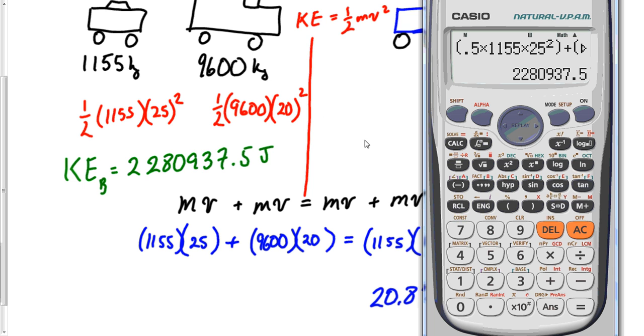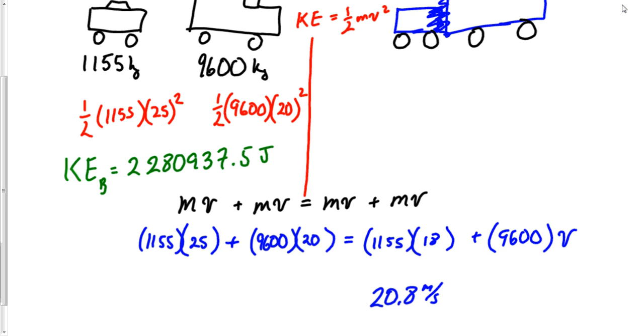Now I'm going to go ahead and wager something. When we add up the kinetic energy on the right side, it's not going to match. So let's just see if we're right here. So on the other side of this problem, I'll write it in blue. We'll have 1 half of 1155. That's not blue, but anyway, we'll survive. Times 18 square plus 1 half 9,600 times 20.8 square.